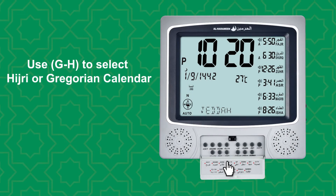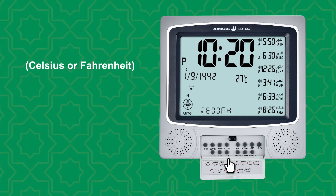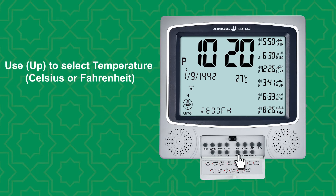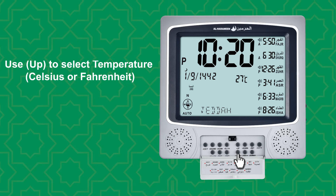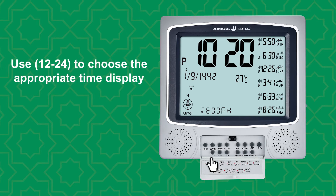Use G through H to select Hijri or Gregorian calendar. Use the Up button to select temperature, Celsius or Fahrenheit. Use the 12 to 24 button to choose the appropriate time display.